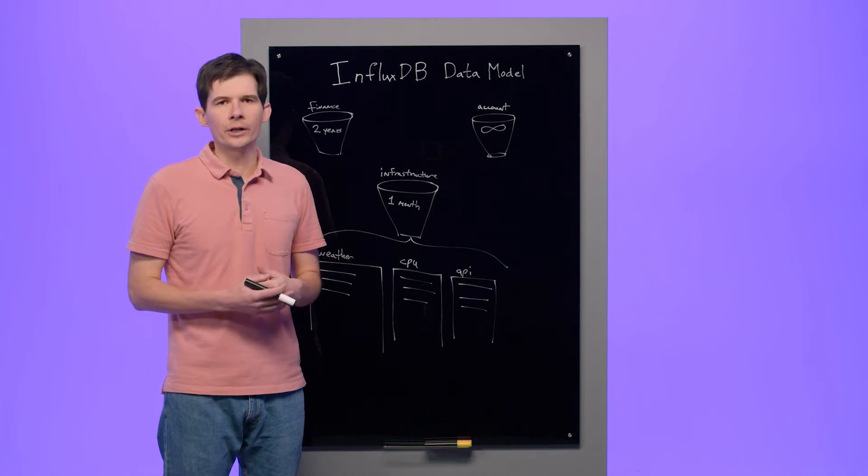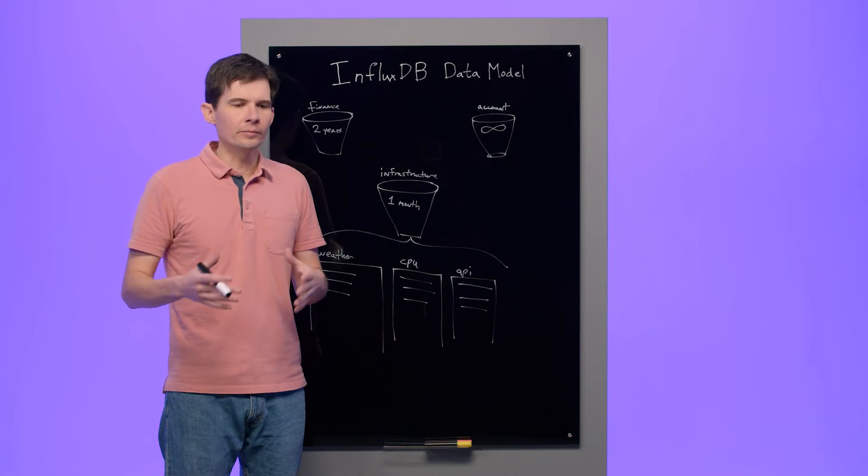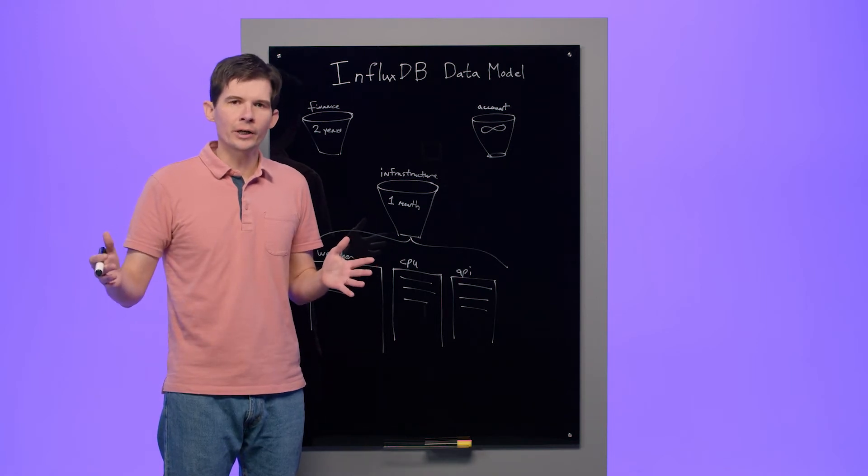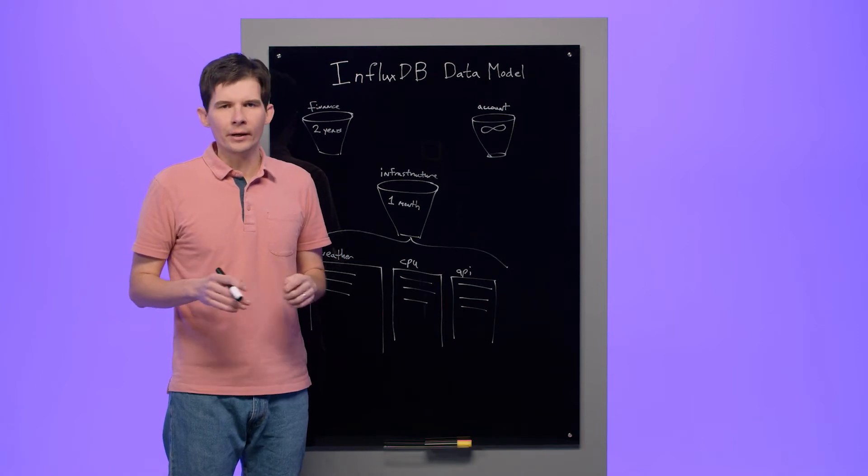Retention policy is something interesting and different about time-series data. A lot of times when you store time-series data, it's only useful for a certain period of time, and then it becomes less useful as time passes. So in the background, InfluxDB will delete the data in these measurements belonging to the infrastructure bucket after it becomes a month old. This is a process that happens in the background, happens more or less continuously, and so your application doesn't need to worry about that.